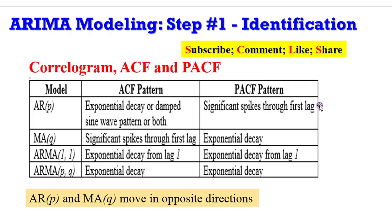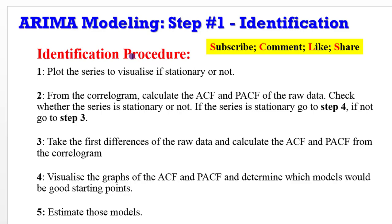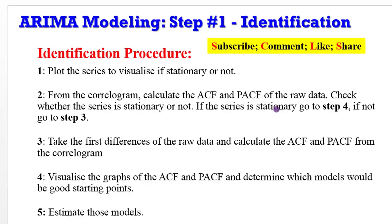Here are five steps to guide the identification procedure. First, plot the series to visualize whether it is stationary or not. Second, use the correlogram to observe the ACF and PACF pattern of the raw data. If the series is stationary, go directly to step four — determine good starting-point models and estimate them. If not stationary, take the first difference, then calculate the ACF and PACF from the correlogram and determine which models are good starting points.